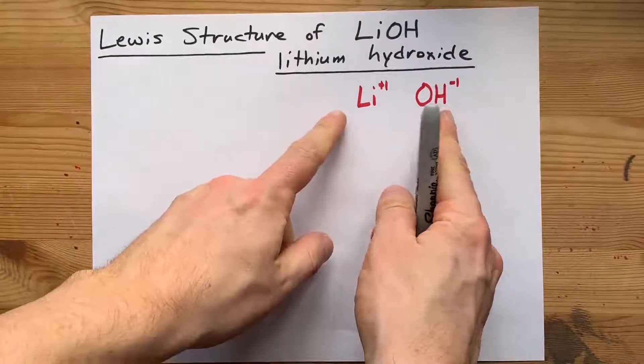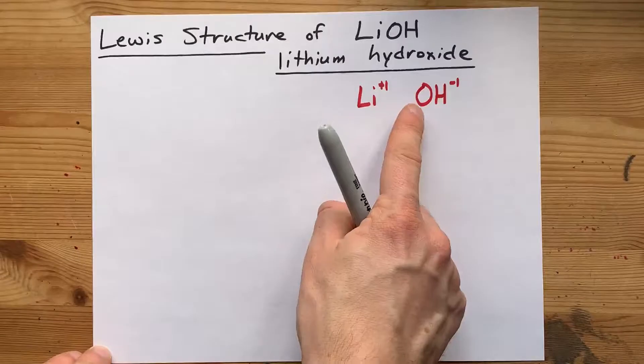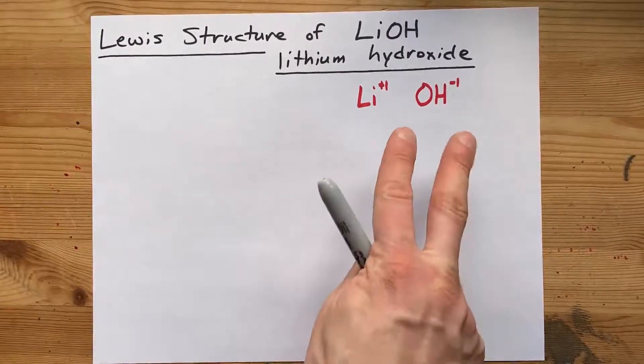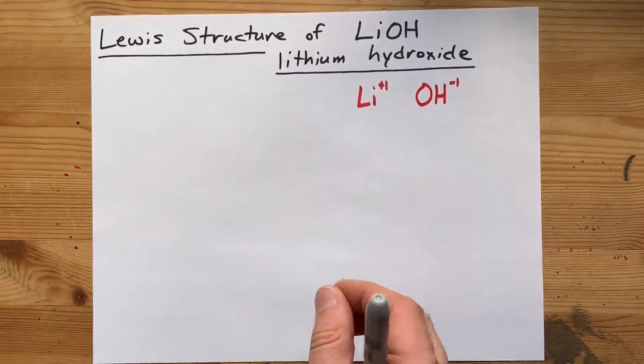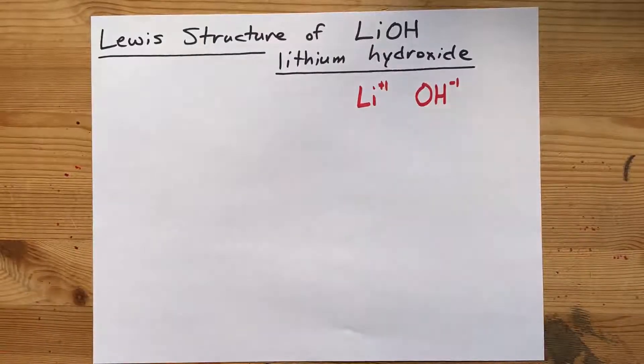These are going to be held together with an ionic attraction. But OH, hydroxide itself, is two non-metals bonded together. That makes it a covalent bond between them.